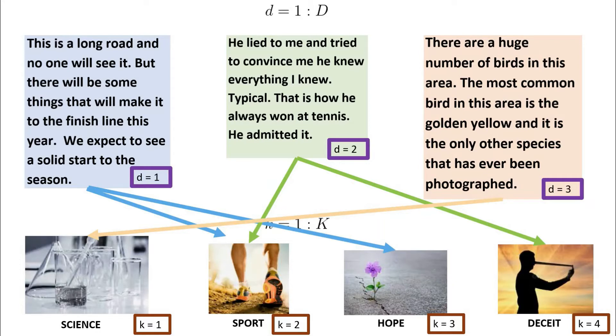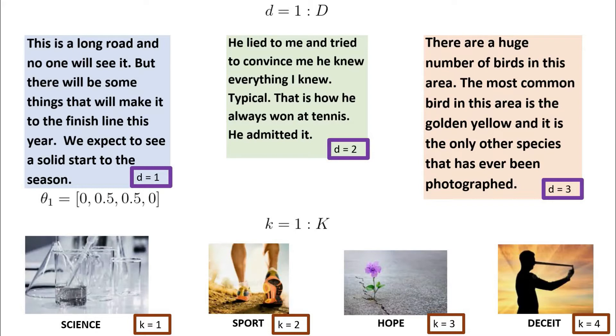So for example, let's let theta_1 be the distribution over topics for document 1. We'd eventually want theta_1 distribution to be equal to something like 50% sport and 50% hope. That is, theta_1 equals [0, 0.5, 0.5, 0], with the elements of this vector being consistent with the topic indices indicated here.